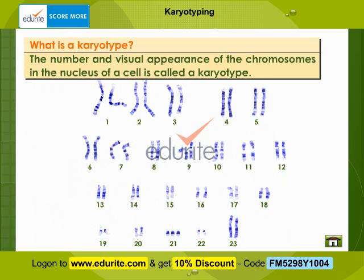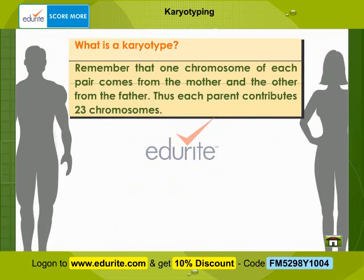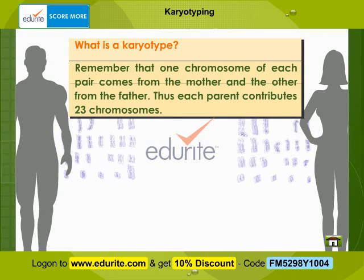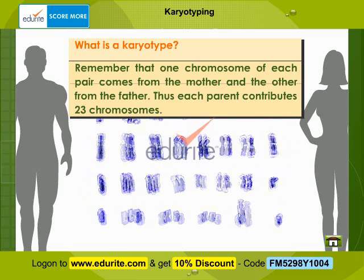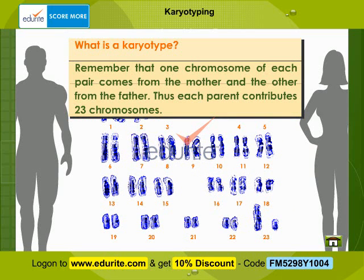What is a Karyotype? The number and visual appearance of the chromosomes in the nucleus of a cell is called a Karyotype. With reference to normal human beings, it is a picture of the 23 pairs of chromosomes arranged in a specific order from the largest to the smallest. Remember that one chromosome of each pair comes from the mother and the other from the father. Thus, each parent contributes 23 chromosomes. Shown here is a full set of chromosomes — a Karyotype.